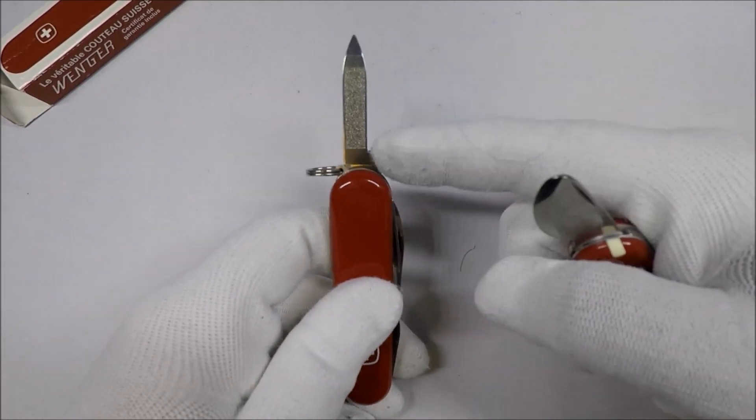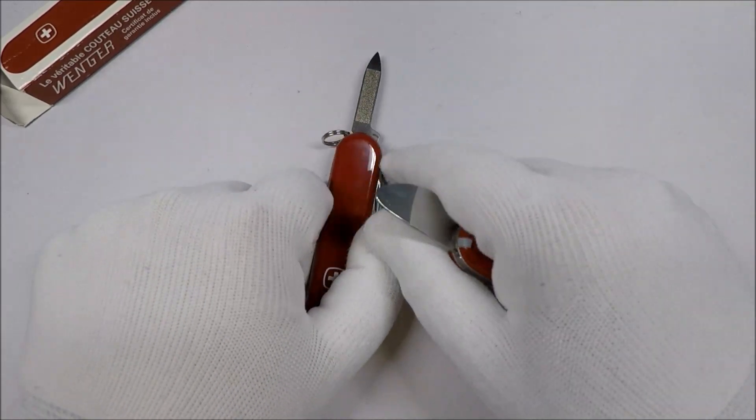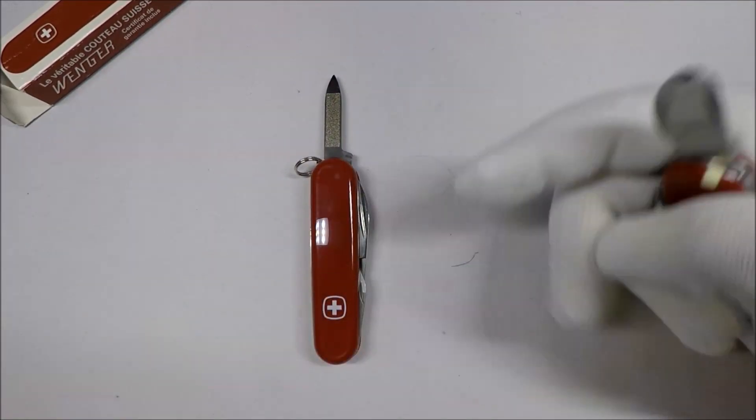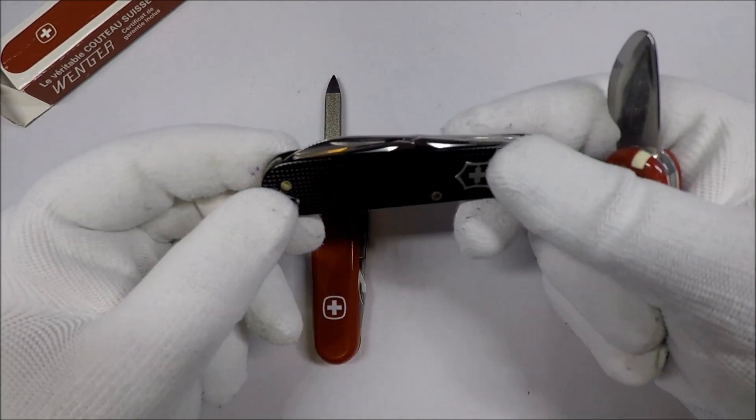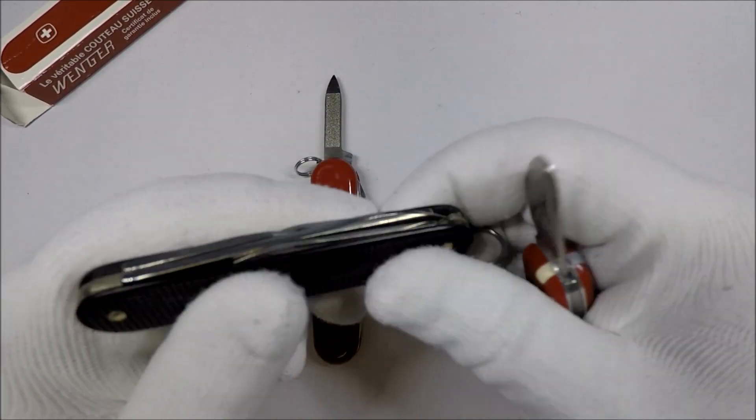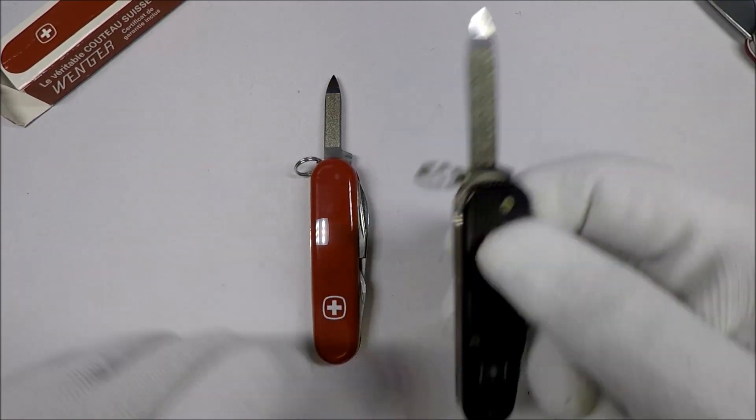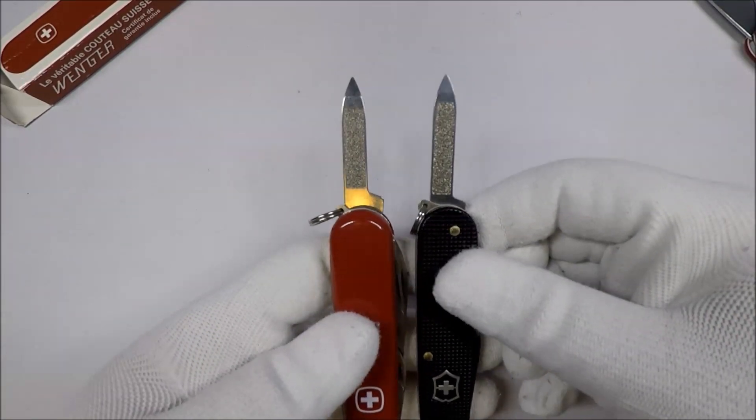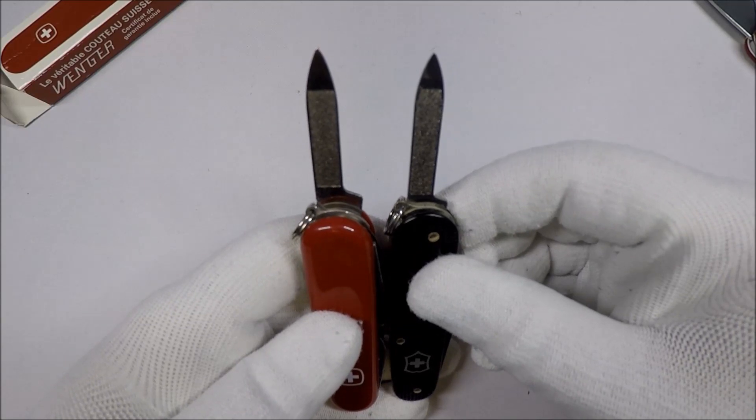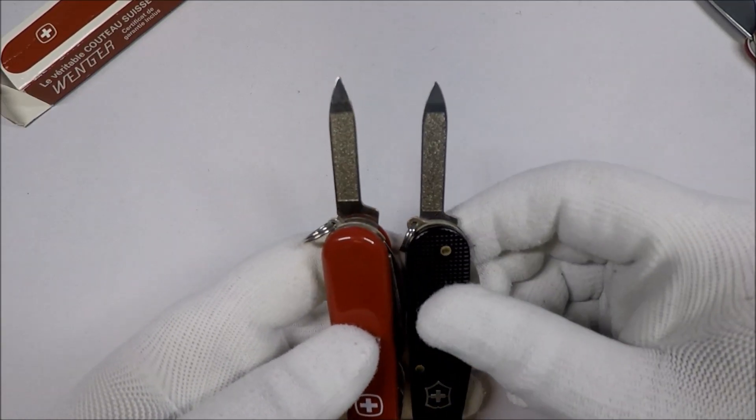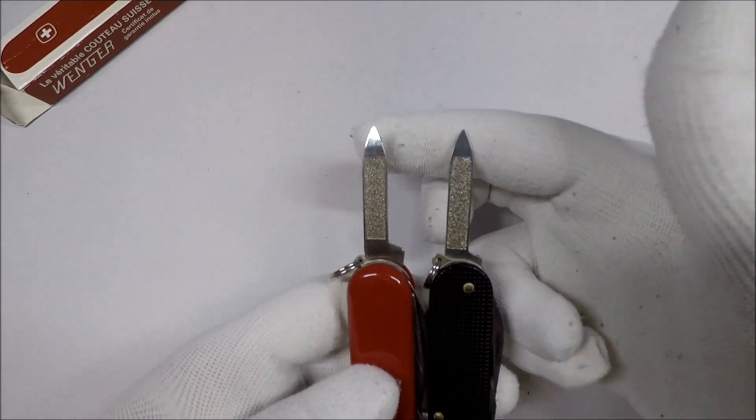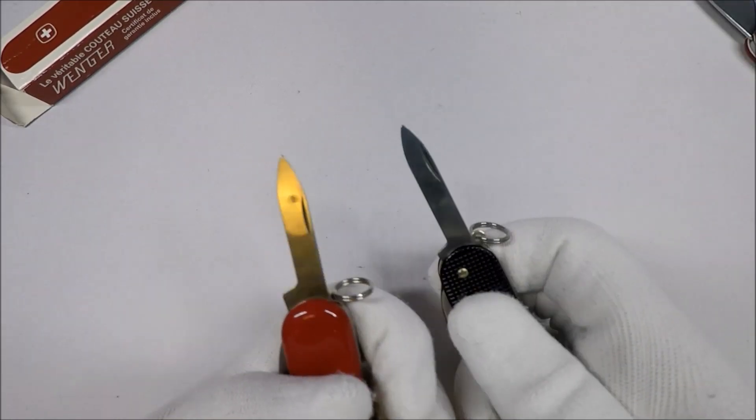It's got a nail file. Now the closest Victorinox comparison right now is probably the Cadet. And for comparison the Cadet's an 84 millimeter knife versus 85. You can see the nail files look pretty similar.